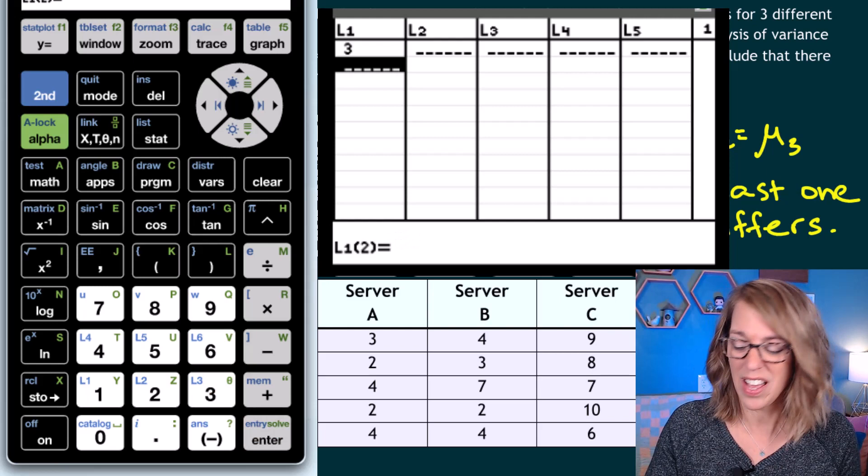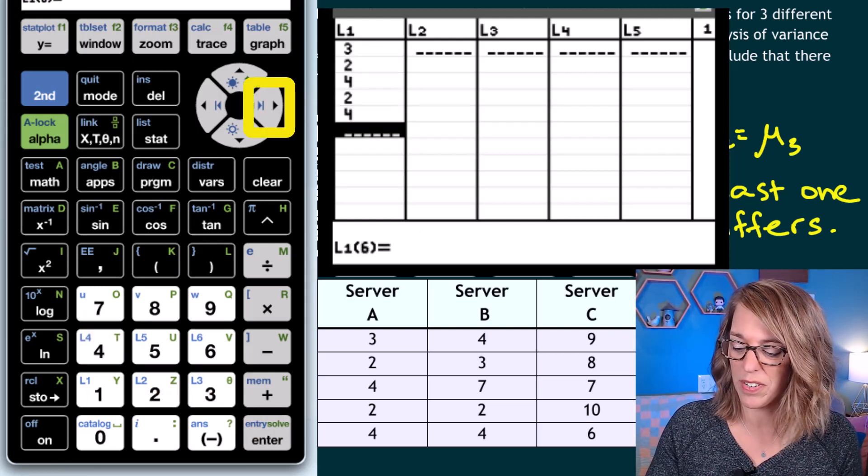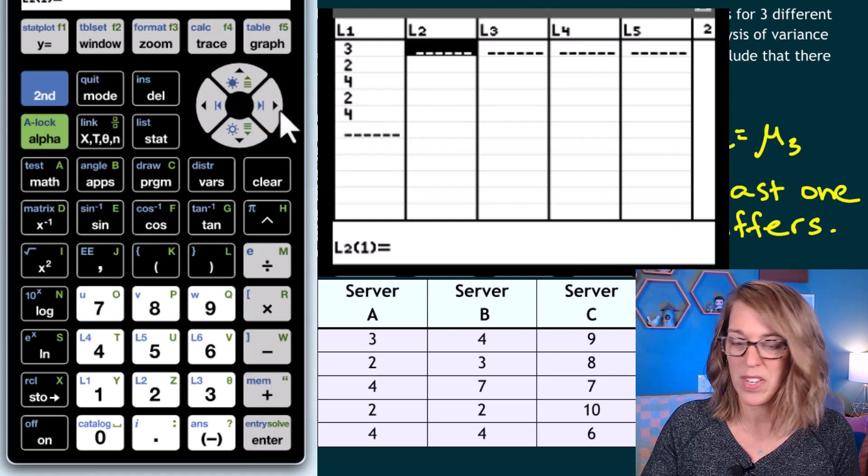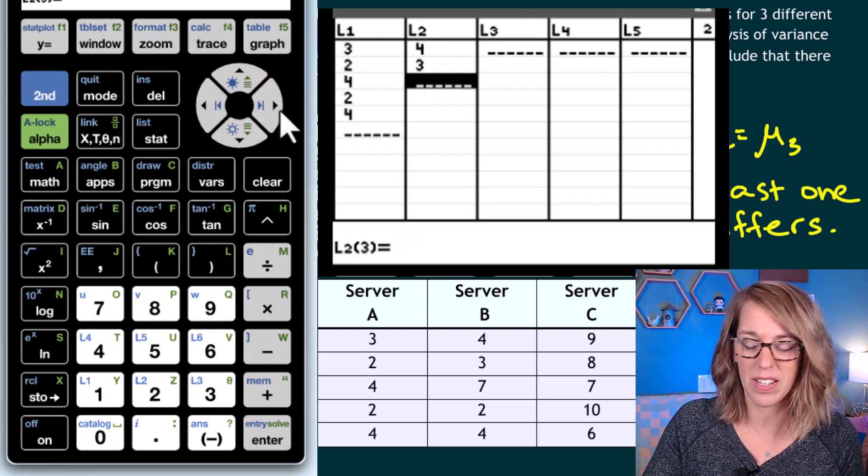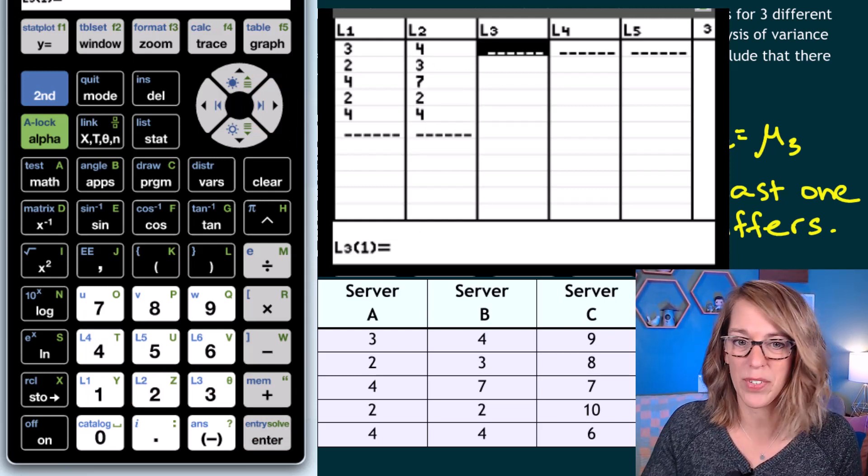So I go three, enter, two, enter, four, enter, two, enter, four, enter. Then I'm going to arrow over to get to list two for server B. So four, enter, seven, enter, two, enter, seven, enter, two, enter, four, enter, three, and then the same for server C.